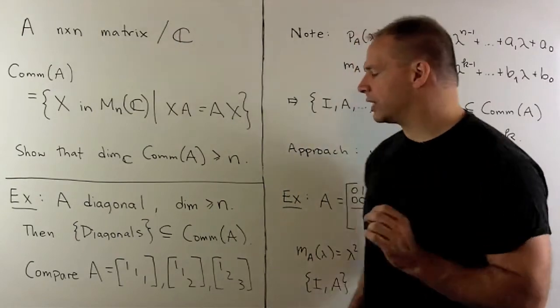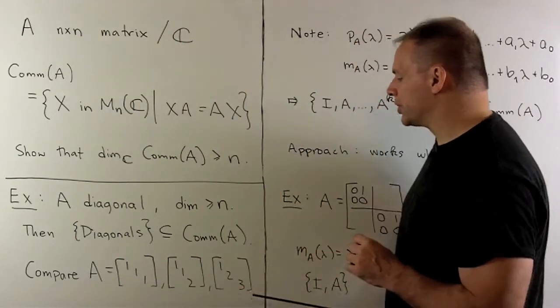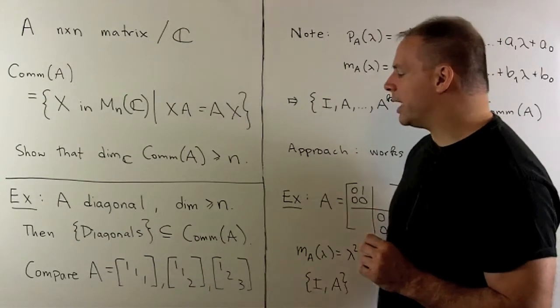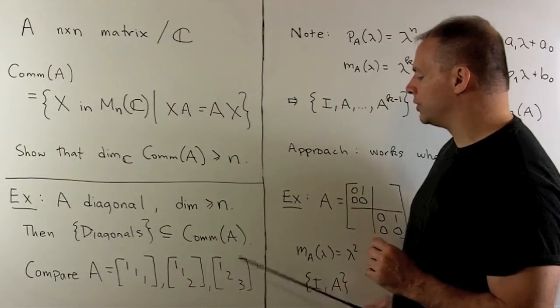To get a feel for this, we should consider a few examples. So you should compare the commutants for the identity matrix, 1-1-2, and 1-2-3.